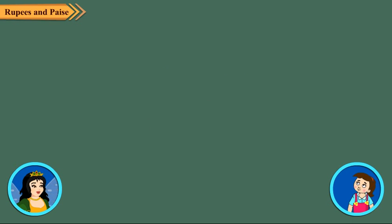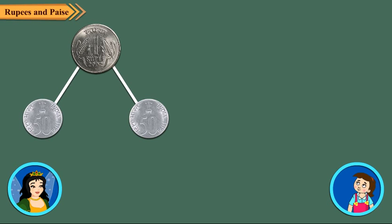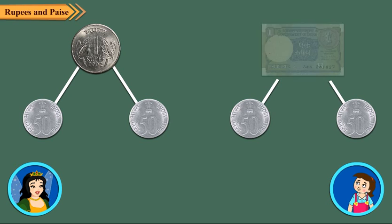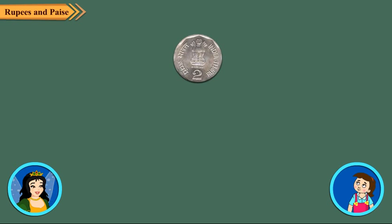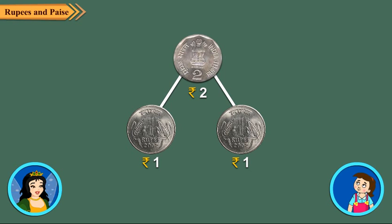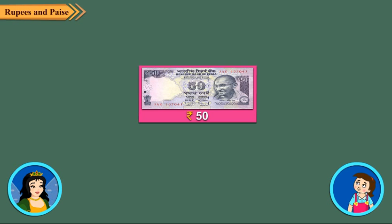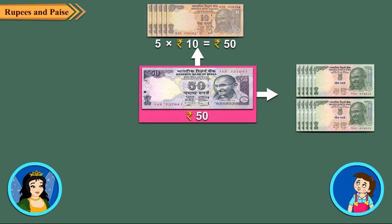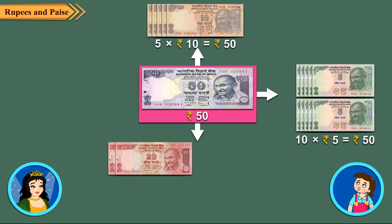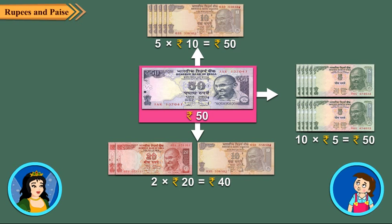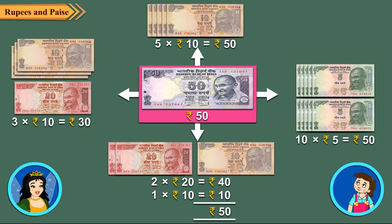It means if we have two 50 paise coins, we can get a 1 rupee coin or a 1 rupee note for these. And if you want to pay 50 rupees to someone, you can do it in a number of ways. Some of these are: 5 notes of rupee 10, 10 notes of rupee 5, 2 notes of rupee 20 and 1 note of rupee 10, or 3 notes of rupee 10 and 1 note of rupee 20.